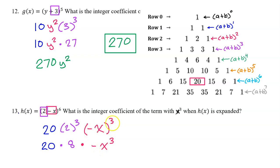When you raise a negative x to an odd power, the negative will always stay. If this were an even power, this negative would go away. Alright, so the coefficient is just going to be 20 times 8 times -1.